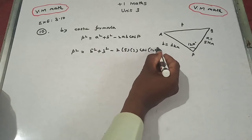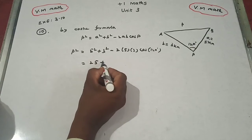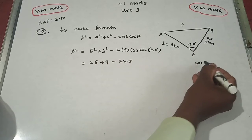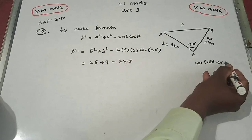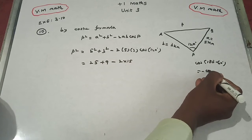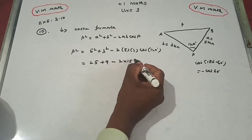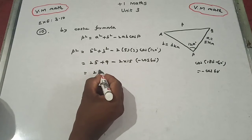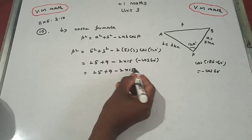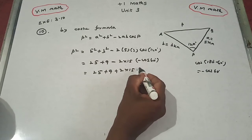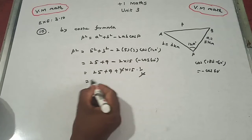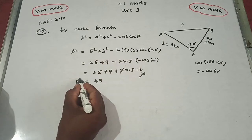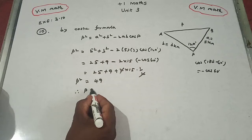This gives 25 + 9 − 2 × 15 × cos(120°). Now cos(120°) = cos(180° − 60°) = −cos(60°) = −1/2. So the expression becomes 25 + 9 − 2 × 15 × (−1/2), which is 25 + 9 + 15 = 49. Therefore p² = 49, so p = 7.